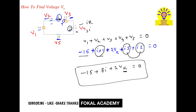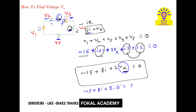The voltage across 5 ohms is nothing but Vx, so Vx equals 5I. Substituting into the equation: minus 15 plus 8I plus 2 times Vx, where Vx equals 5I, gives minus 15 plus 8I plus 2 times 5I equals zero.